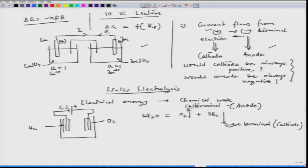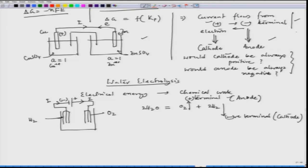In case of electrolysis cathode is a negative terminal. Why? Because as per convention, current flows from positive to negative terminal. So here current flows this way, which meets the convention. Now, in order to understand why this negative terminal becomes cathode and this positive terminal becomes anode, we have to understand the cell reaction. And whenever we have a water system, there are four reactions that could be possible in water, provided there is dissolved oxygen.